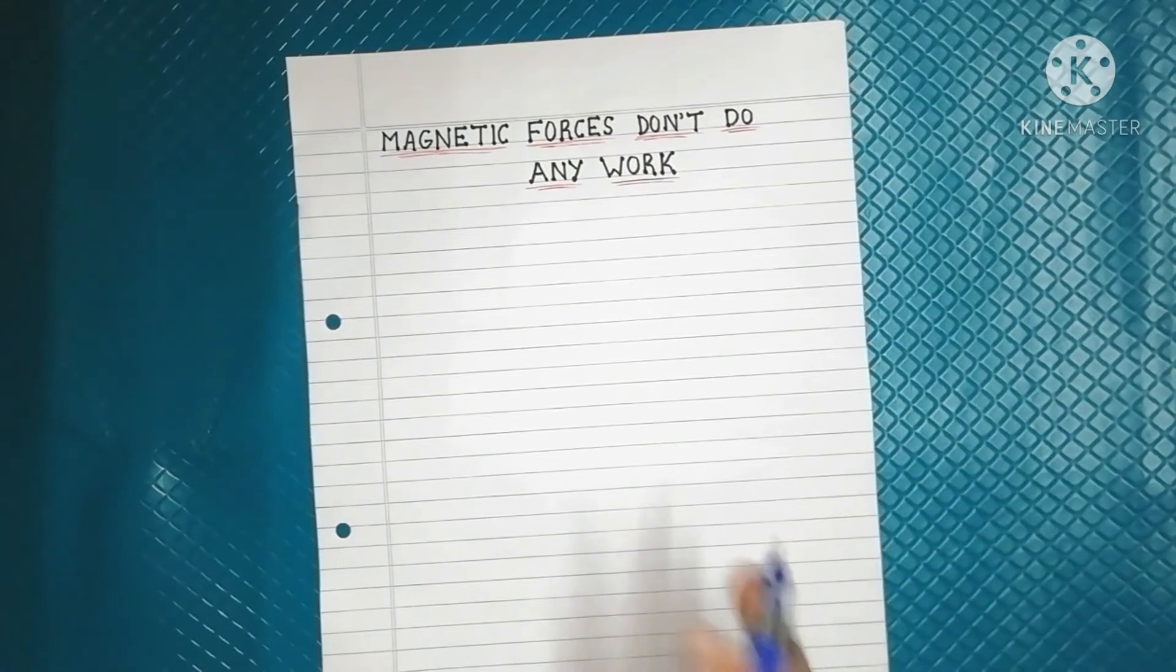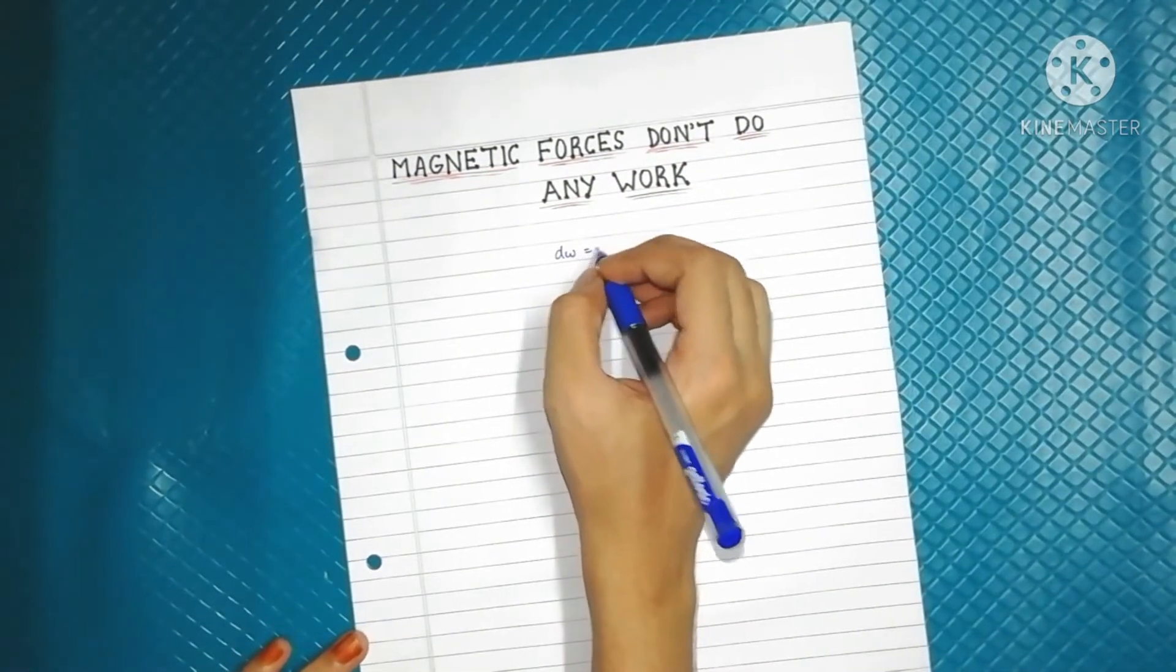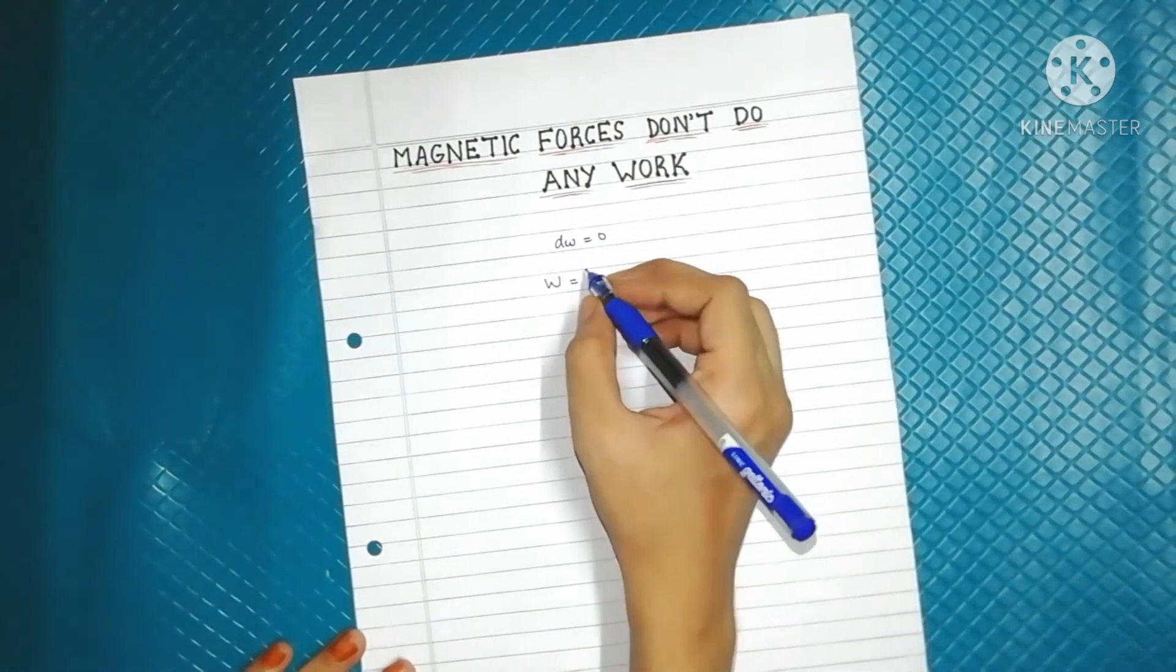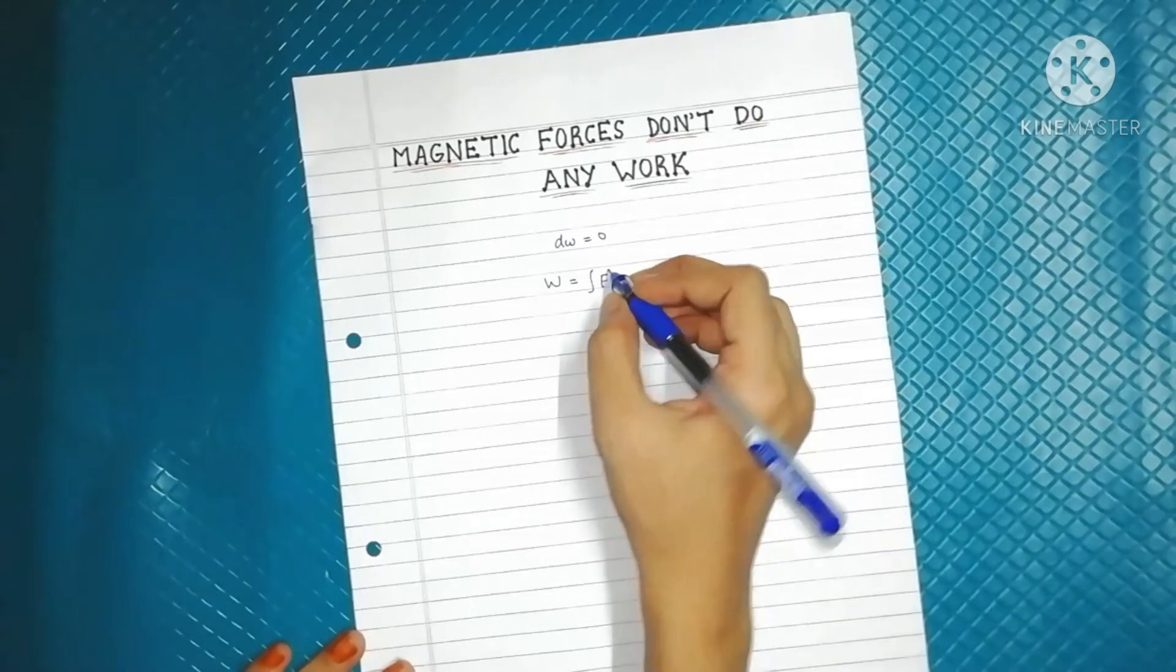We basically need to prove that dW value is zero. As we know, work done is defined as the product of force into displacement.